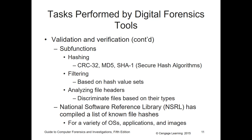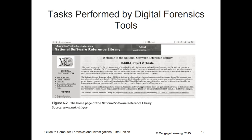Sub-functions include hashing — MD5, SHA — these are secured hashing algorithms that are known and trusted. Filtering is based on hash value sets; we can hash a particular photo and search for that hash value. Analyzing file headers disseminates files based on their types — maybe we only want Word documents or PDFs. We can analyze extensions to pull just the file types we want. The National Software Reference Library has compiled a list of file hashes for known files across a variety of operating systems, applications, and images at NSRL.nist.gov.